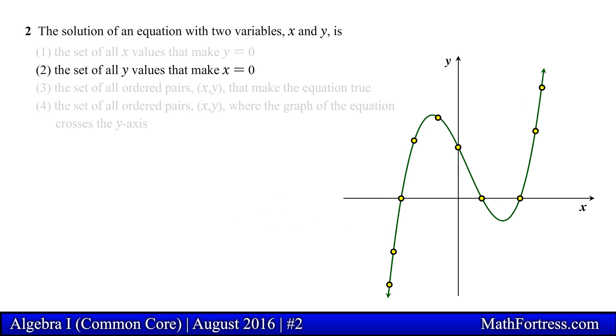The second option is very similar to the first option, in this case the statement reads, the set of all y values that make x equal to 0. Graphically this will represent all the points where the equation of the curve crosses the y axis. In other words these points are the y-intercepts of the equation. Again similar to the first option there are many more solutions than just these particular set of points.